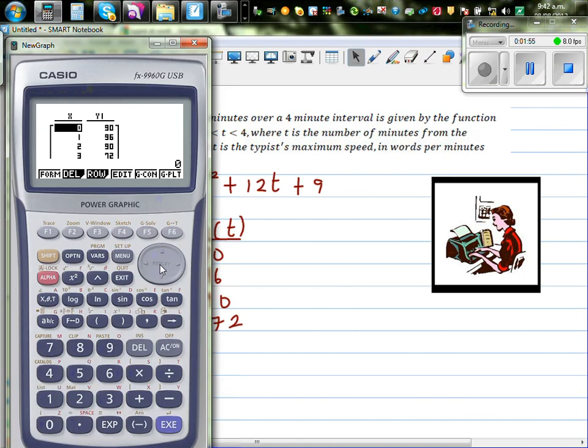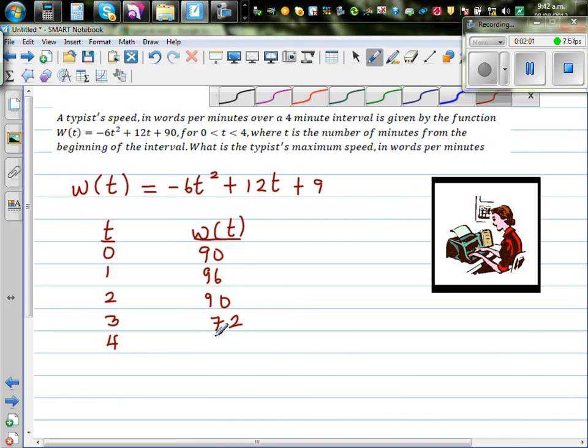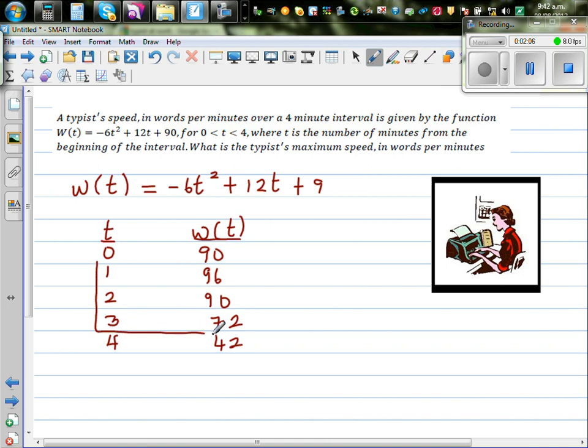And at 4 minutes, of course 4 should not be included. It is 42. So 4 minutes it's 42. So actually you can only include this much. This can only be included. So let's graph this.